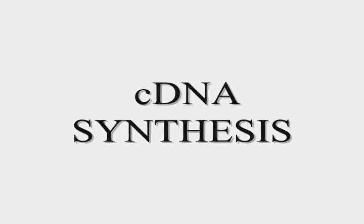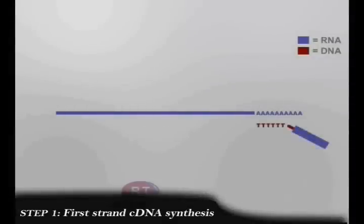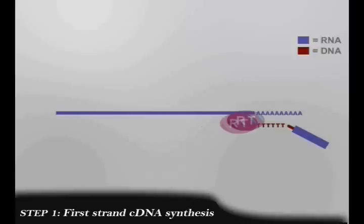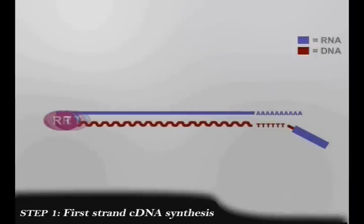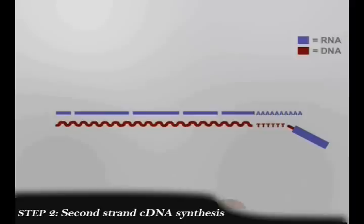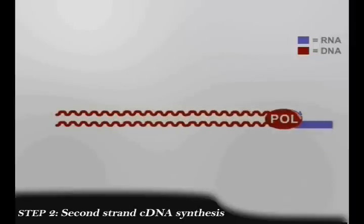After RNA isolation, the next step is cDNA synthesis. The mRNA is taken and cDNA primers are added to it. The reverse transcriptase enzyme helps to synthesize the first cDNA strand. Next, the second cDNA strand synthesis takes place. RNA is fragmented using RNase H enzyme, and DNA polymerase enzyme helps to synthesize the second strand when the primer is introduced.